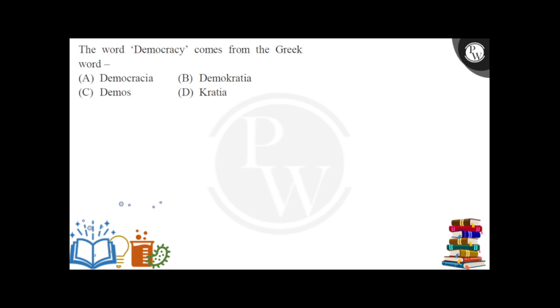Hello, let's read the question. The question says the word democracy comes from the Greek word. The word democracy is derived from which Greek word — it is derived from the Greek word.